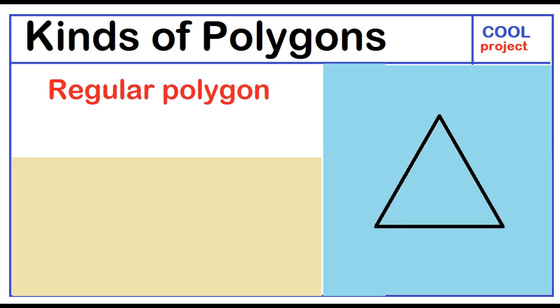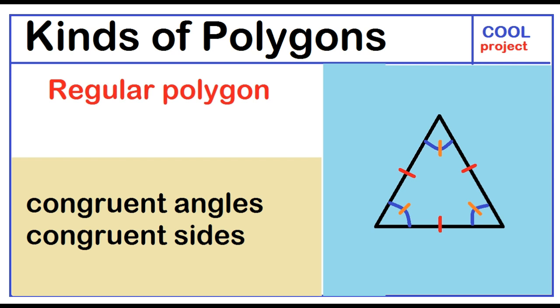Regular polygon is regular when all sides have the same length and all angles are equal in measure.